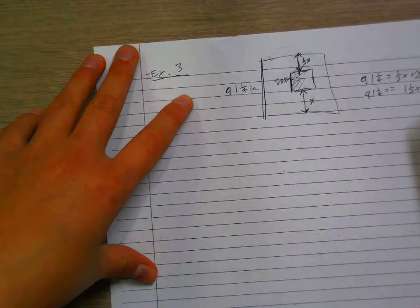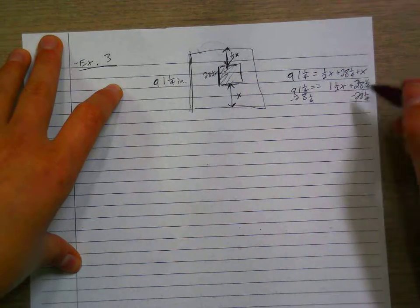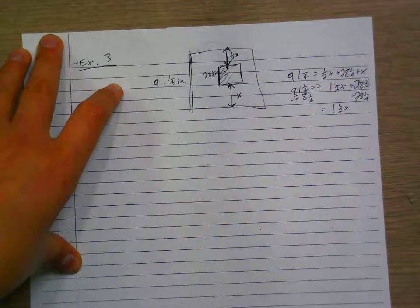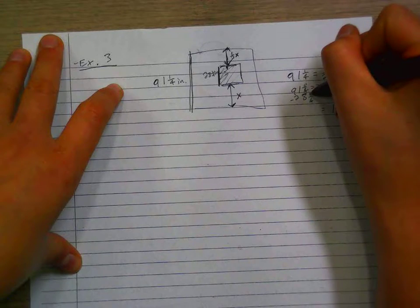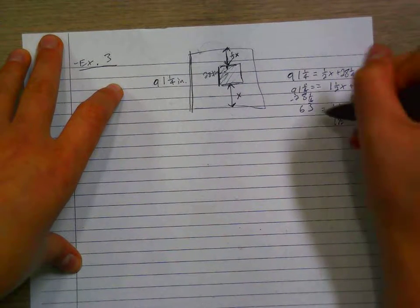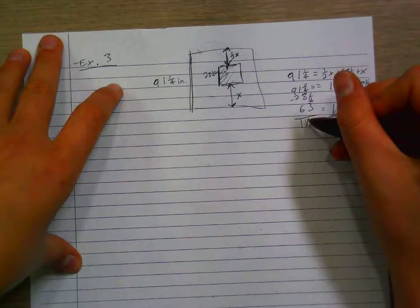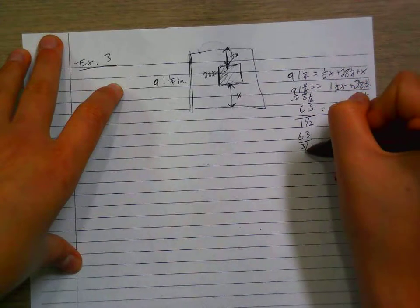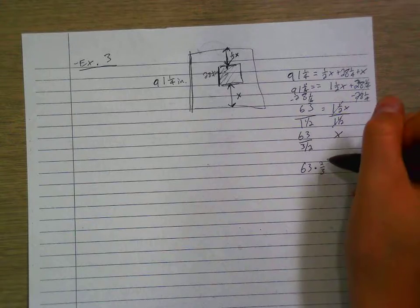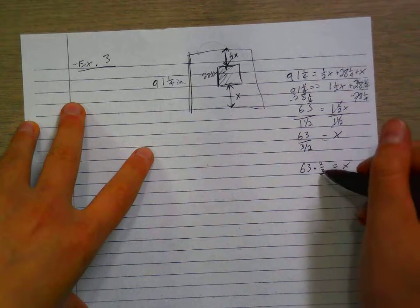Now let's subtract 28 and 1/4 from both sides. These cancel. So over here we're left with 1 and 1/2 x. On this side we are left with 63. So now we have to divide that by 1 and 1/2. In order to actually do this problem, let's say it's 63 divided by 3/2, and that becomes 63 times 2/3, because divided by 3/2 is the same as multiplied by 2/3, equals x. It becomes x equals 42.